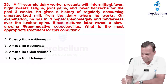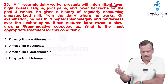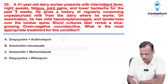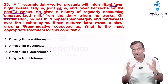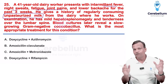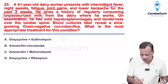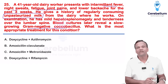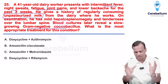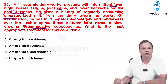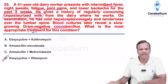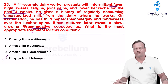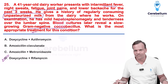A patient has intermittent (undulant) fever, night sweats, fatigue, and joint pain, and has consumed unpasteurized milk — suggesting brucellosis, confirmed by gram-negative coccobacilli. The drug of choice for brucellosis is doxycycline plus rifampicin.